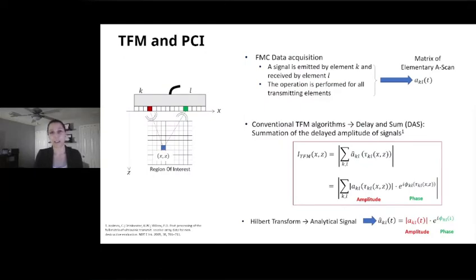So TFM and PCI now. PCI is also a technique based on FMC data acquisition. Here we're representing the same principle with element K and L to look at this pixel in the region of interest. TFM expresses it by looking at the amplitude of the signal for all the elementary A-scans. Using the Hilbert Transform, we can also look at the phase for that same signal. So we have the amplitude information, but we also have the phase information for all of those elementary A-scans in our FMC matrix.